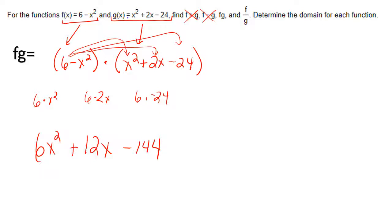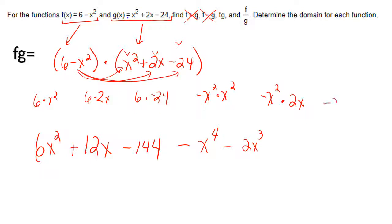Now, I'll go back and I will pick up with the negative x squared and distribute that. Negative x squared times positive x squared is negative x to the fourth. Negative x squared times positive 2x is a negative 2x to the third. Remember to add the exponents. And negative x squared times negative 24 is positive 24x squared.